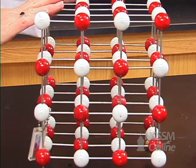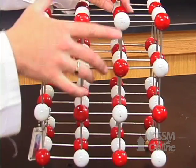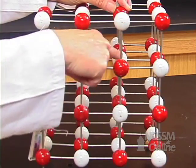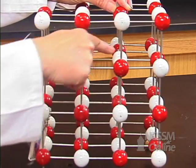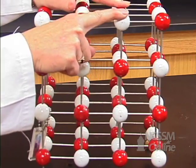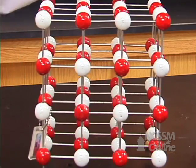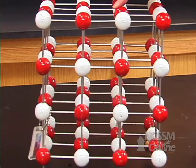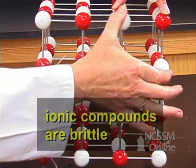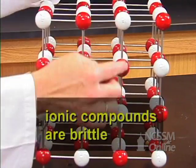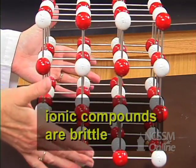If you hammer on this and it slides down to here, then the white ones will repel each other because of electrostatic charges. This would be a positive and a positive, and that would be a negative and a negative. So if you push that down, they're going to repel and the whole thing breaks.